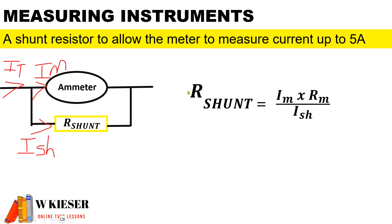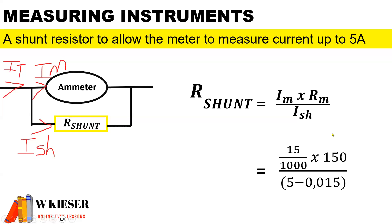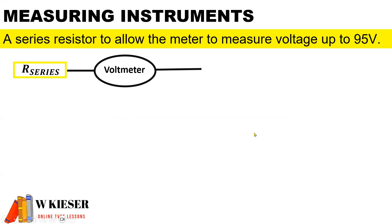Our formula to calculate the value of the shunt resistor is the current through the meter multiplied by the resistance of the meter, divided by the shunt current. It is 15 milliamps passing through the meter — to convert milliamps to amps, it will be 15 divided by 1000 — multiplied by the resistance of 150 ohms, and divided by the total current of 5 amps minus the current through the meter of 15 milliamps. Therefore the value of the shunt resistor is 0.451 ohms.